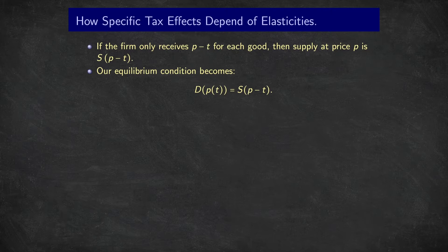Well, they only receive P-T for each good. So that's the amount that they will plug into their supply function. That will give them the profit maximizing quantity to supply to the market when the price is P. They use P-T in the function.